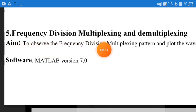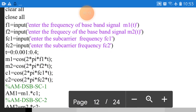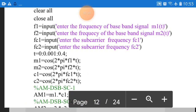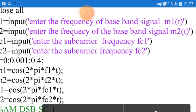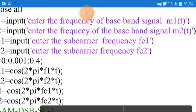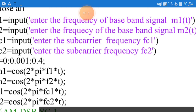The next topic is frequency division multiplexing and demultiplexing, that is FDM. Here two DSB-SC signals are generated with different carrier frequencies and they are added together. FDM combines all modulated signals — that is multiplexing. From the combined signal, we have to separate the DSB-SC signals — that is demultiplexing. Now let us see how it is done.